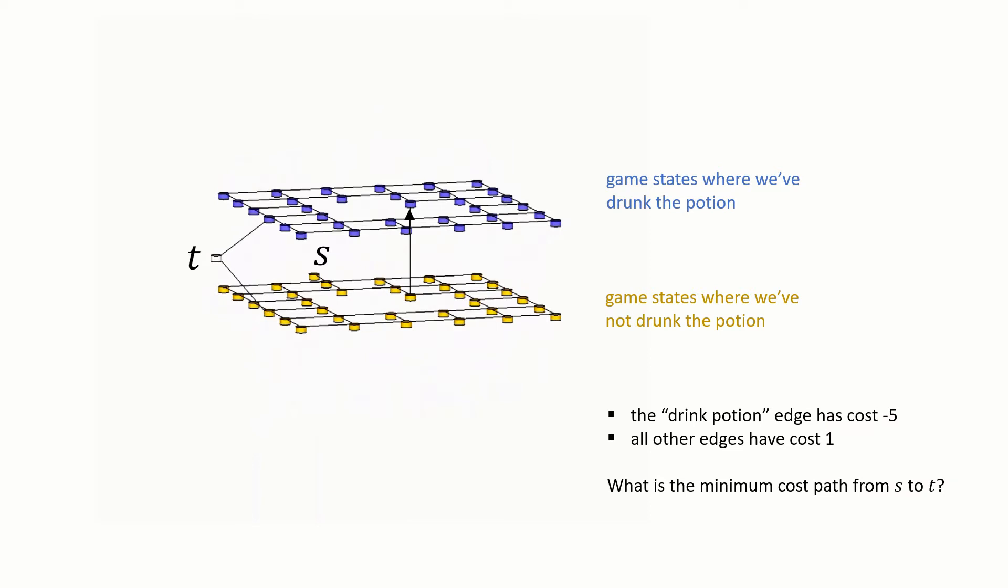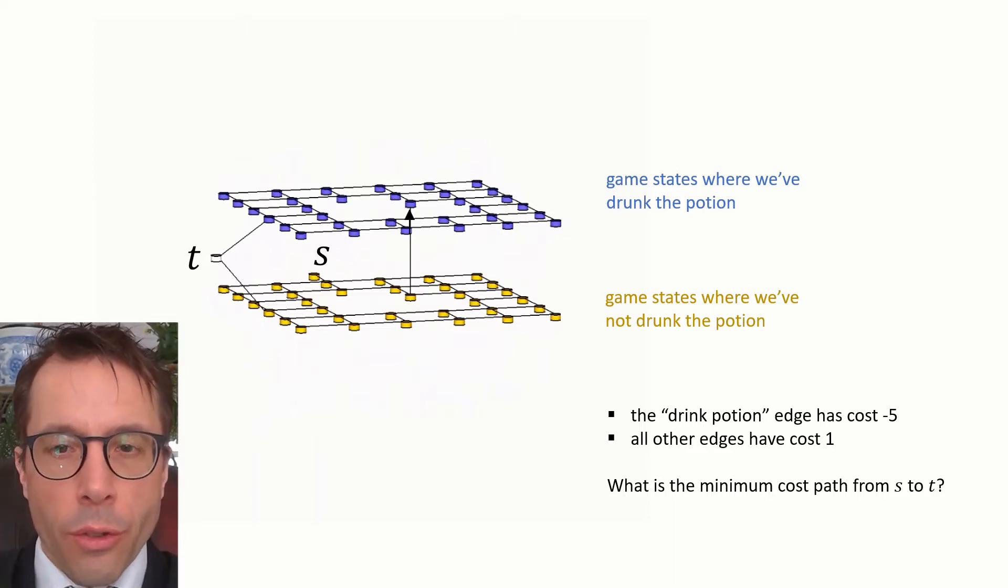So let's just encode these costs in the edges of the graph. The outgoing edge, drinking the potion, will have reward 5, which we might well call the cost of minus 5, and all the other edges will have cost 1. So this is a nice, clean graph problem. We just want to find the minimum cost path from s to t.